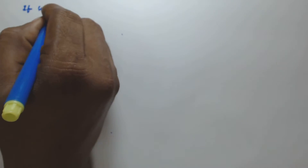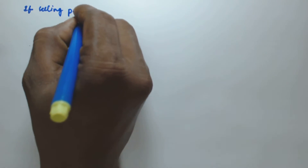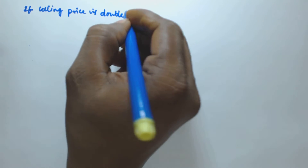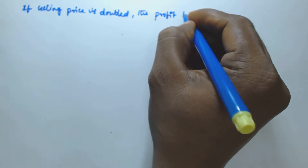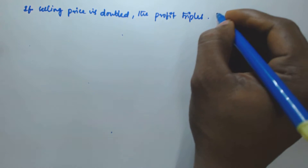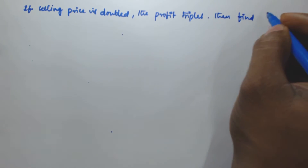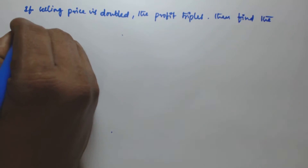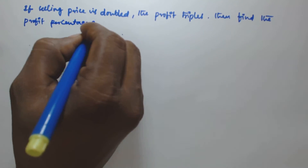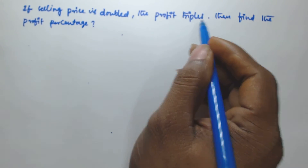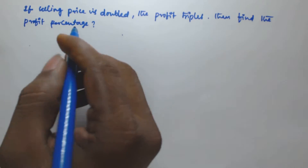Hello friends, in this video we will see another problem based on profit and loss. The problem is: if the selling price is doubled, the profit triples. Find the profit percentage.